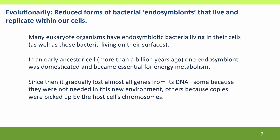Evolutionarily, mitochondria are reduced — that is shrunken — smaller forms of bacterial endosymbionts, bacteria that live and replicate within our cells. How did this come about? Many eukaryote organisms — that's organisms with nuclei — have endosymbiotic bacteria living in some of their cells, as well as the bacteria that live on the surfaces of all living things. These bacteria perform all kinds of metabolic functions for the cells they live in, but they're also, in some sense, exploiters — using resources from the cell while providing benefits.